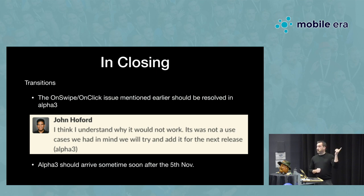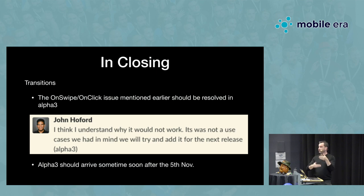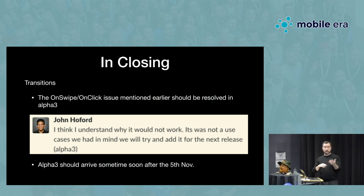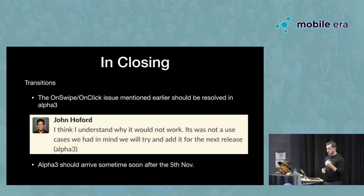You can't have an onClick and an onSwipe defined in the same transition because one will cancel out the other. I spoke to John Horford — it hadn't occurred to them that might be a use case. I was thinking of a bottom sheet: you swipe up to open it, but have a click button to dismiss it. They've mentioned it might be added in the next release, alpha 3, which should arrive sometime after November 5th when one of the main engineers returns from paternity leave.